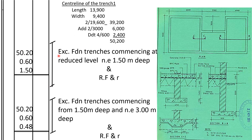We have already found the depth, now we need the center length. For trench 1, which is the external trench, we will check the total length. We add 400 and 400 for the spread. It is 13,900 because it was 13,500 plus 400 — 200 on both sides. Then the width is 9,000; we add 200 and 200 to get 9,400. We get the total perimeter is 39,200.